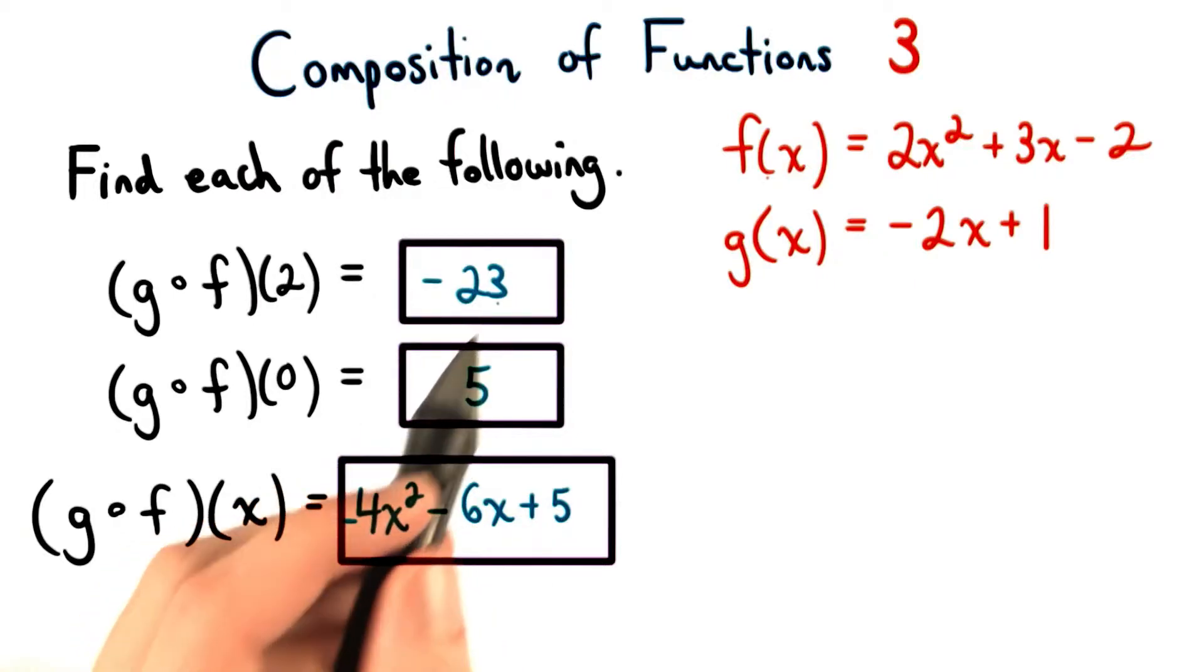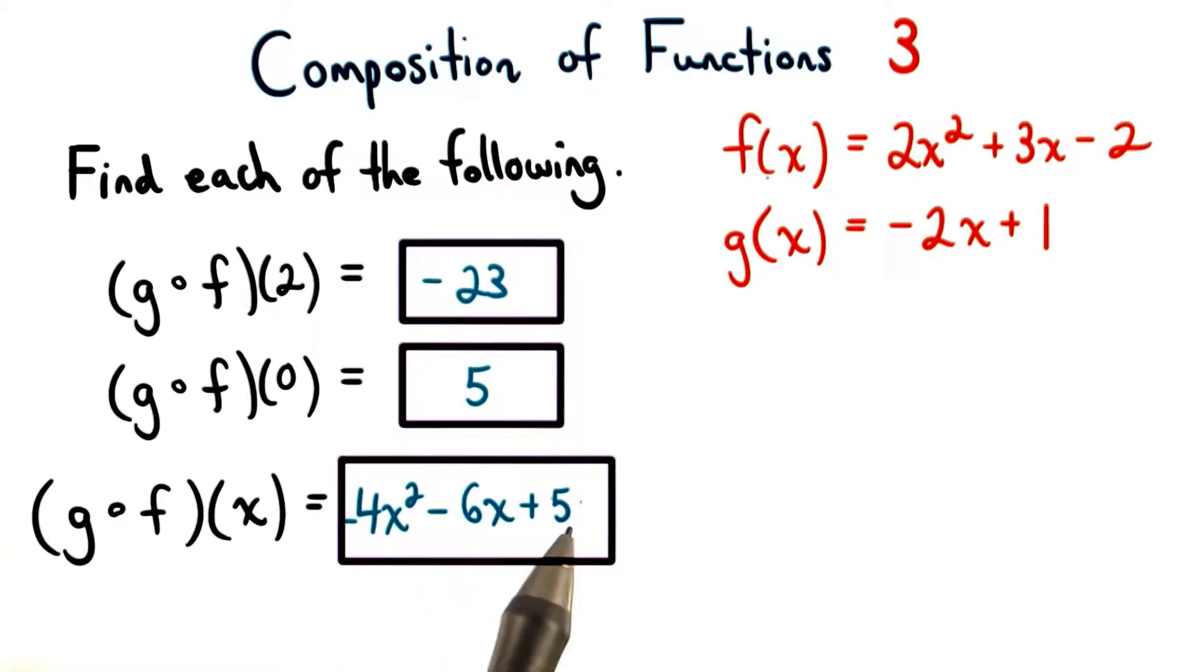Here, the solutions are negative 23, positive 5, and negative 4x squared minus 6x plus 5. Excellent thinking if you got all those correct.